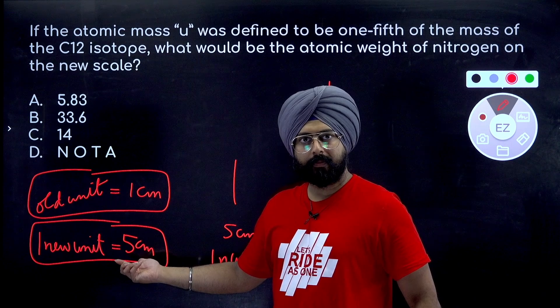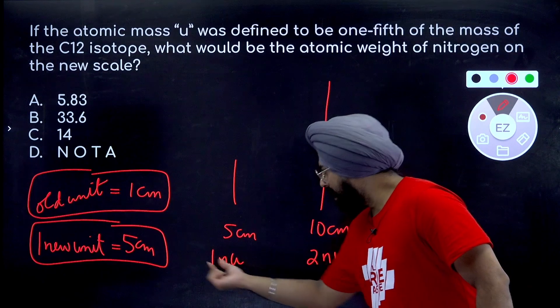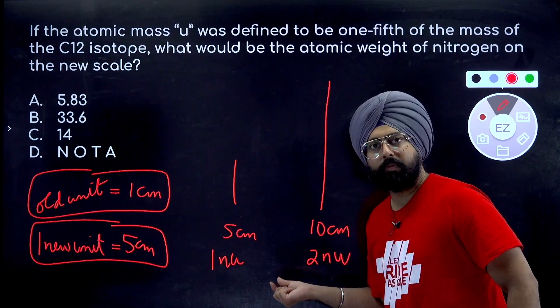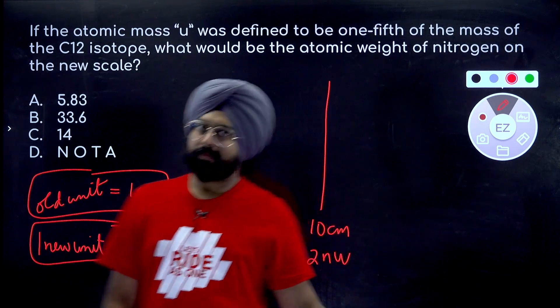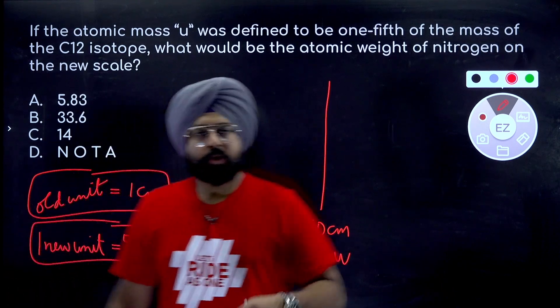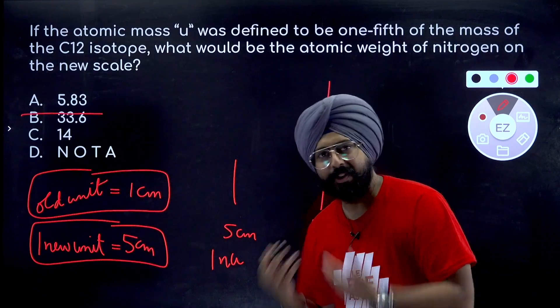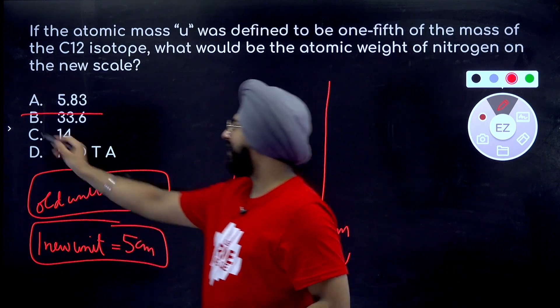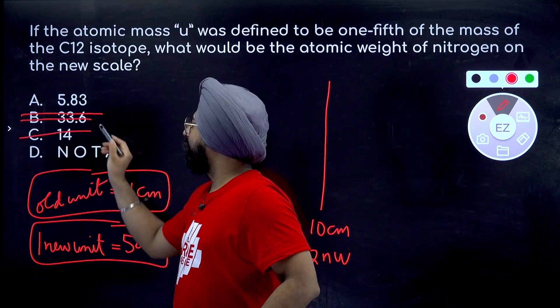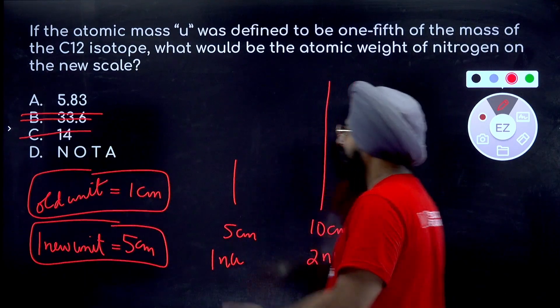So my point is that whenever your new unit is bigger in size itself, the measurements will become smaller, right? The number in front of the measurements will become smaller because the unit itself is big now, very obvious from here. So answer can't be 33.6 because your answer has to be smaller than 14, right? 14 can also not be the answer, so B and C are already canceled. Now you just have to check whether A is correct or not.